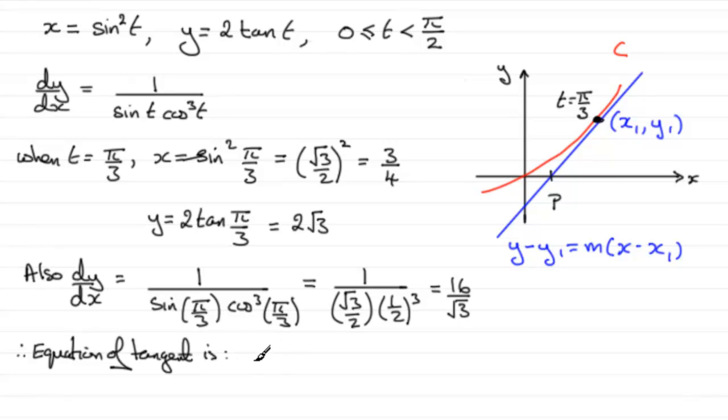it's going to be y minus y₁, which is 2√3, equals m, the gradient, which is now 16/√3, multiplied by x minus x₁ at 3/4.